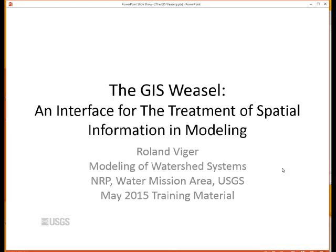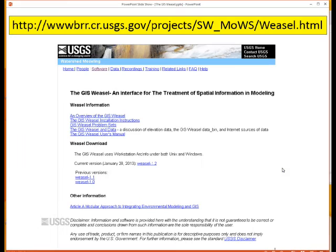Hello, my name is Roland Vijay. I'm with the Modeling of Watershed Systems Project, and I'm going to talk to you briefly about the GIS Weasel, which is a preprocessor largely for deriving maps of features and parameters for use with PRMS, or really a number of other kinds of watershed models. This presentation is meant to be viewed in conjunction with a separate recording which actually shows a demonstration of the GIS Weasel software.